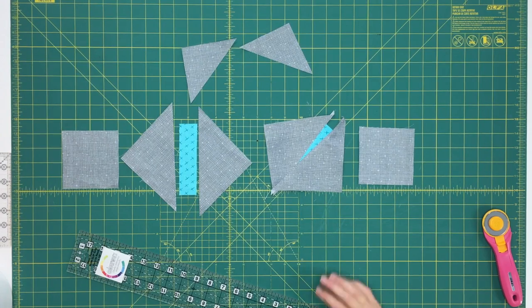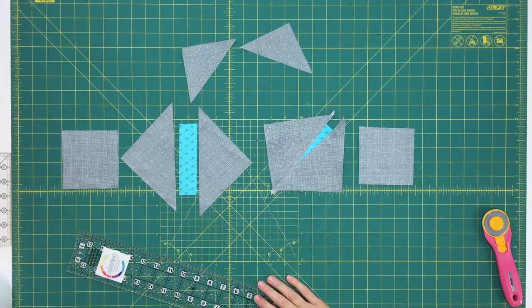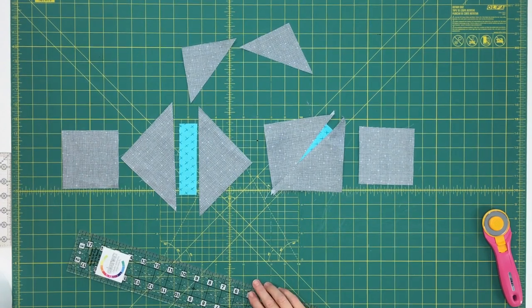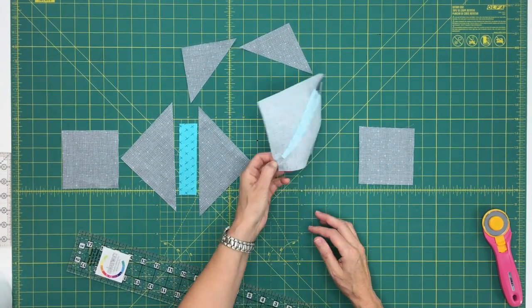So we're back at the cutting table and I've sewn on both triangles to my first antenna and I've also reduced the bulk of the seam allowance by cutting away the extra fabric on the back as you can see.